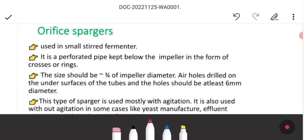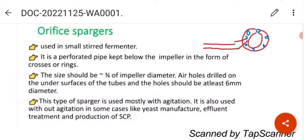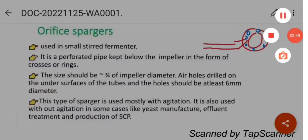The orifice spargers are also called ring spargers. This type of spargers is mostly used with agitation and it is also used without agitation in some cases like the yeast manufacture, effluent treatment and production of single cell protein.